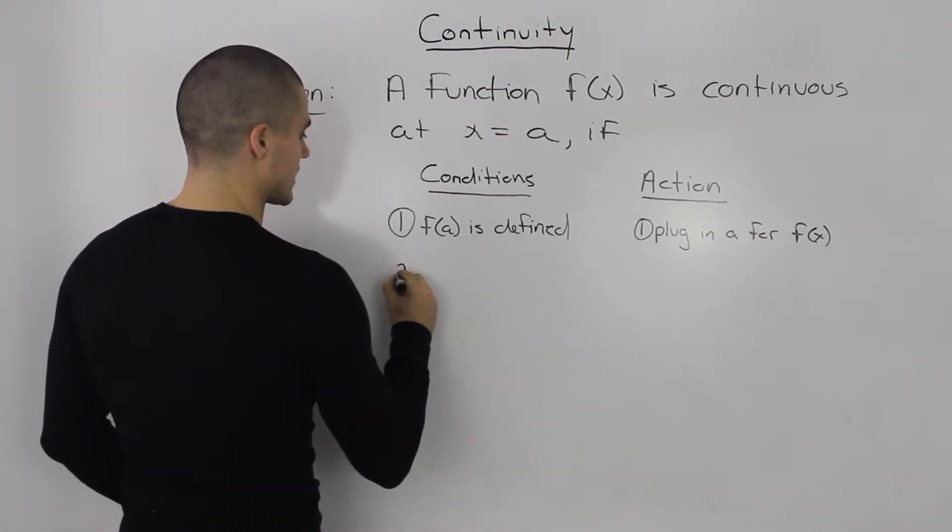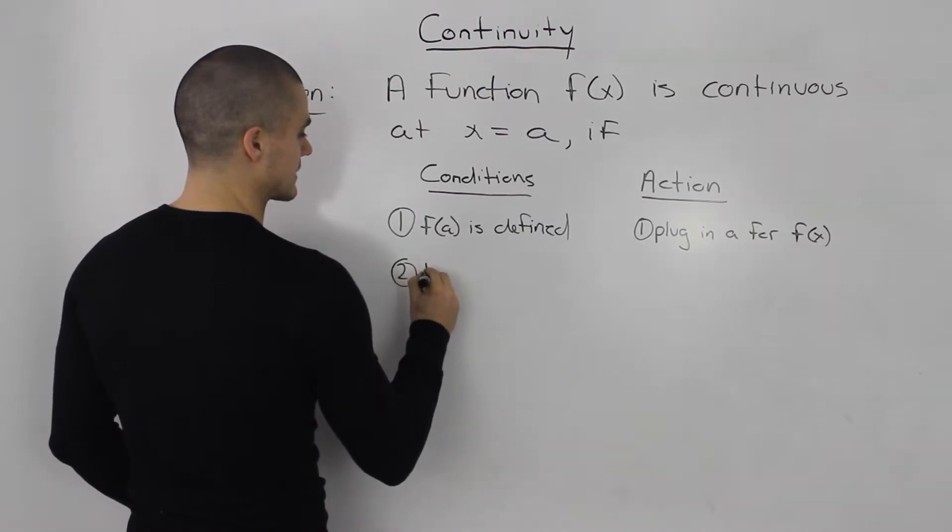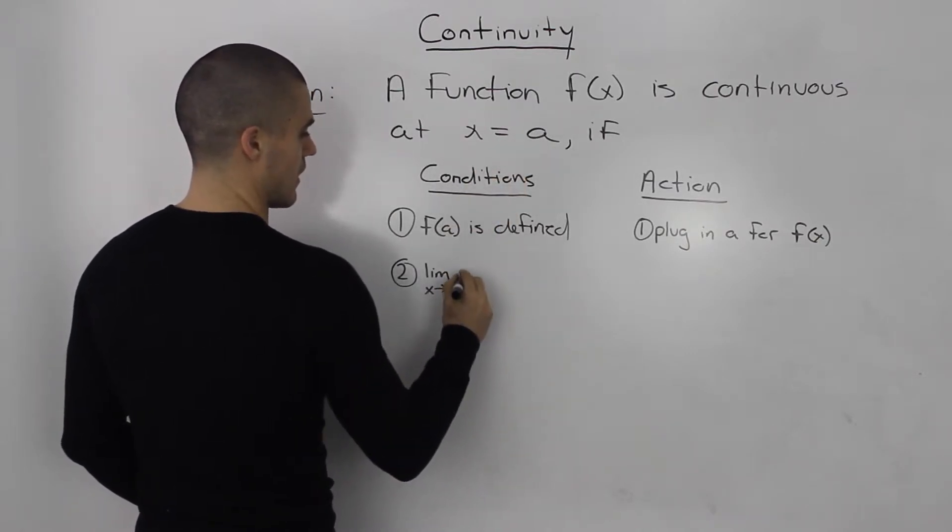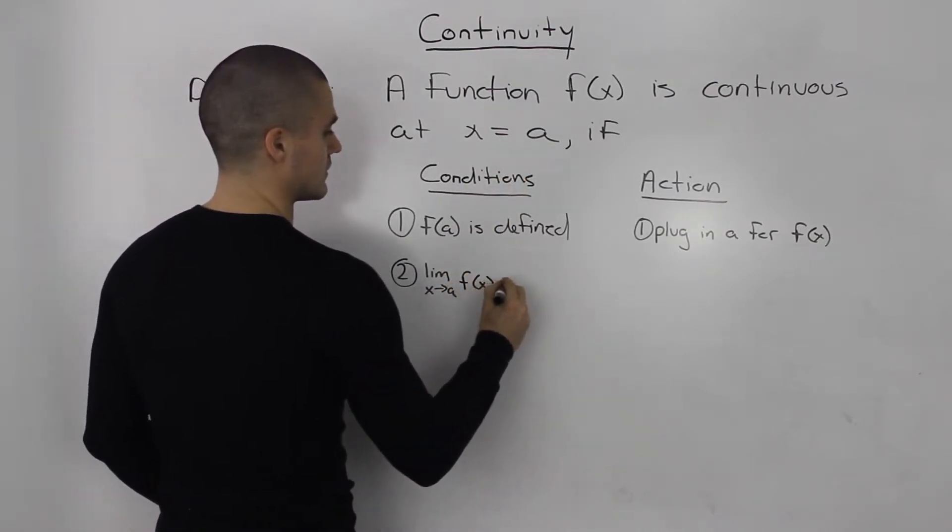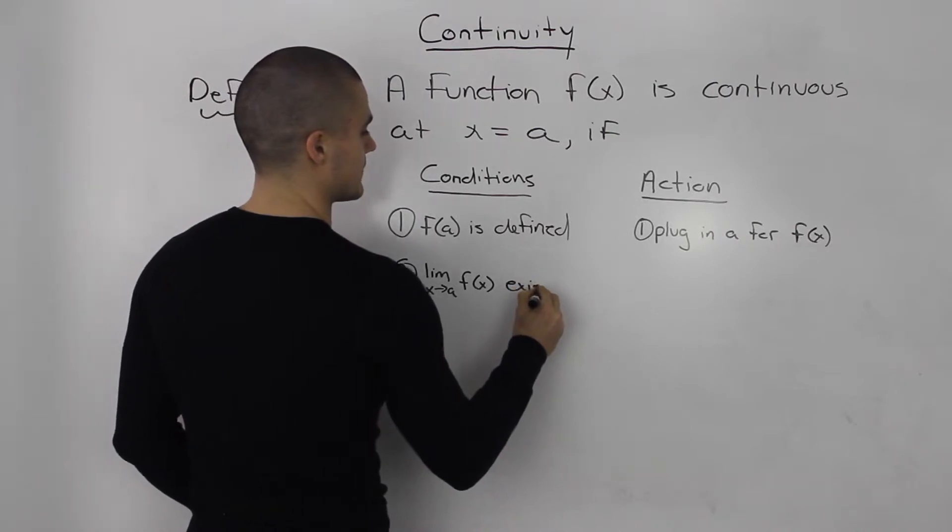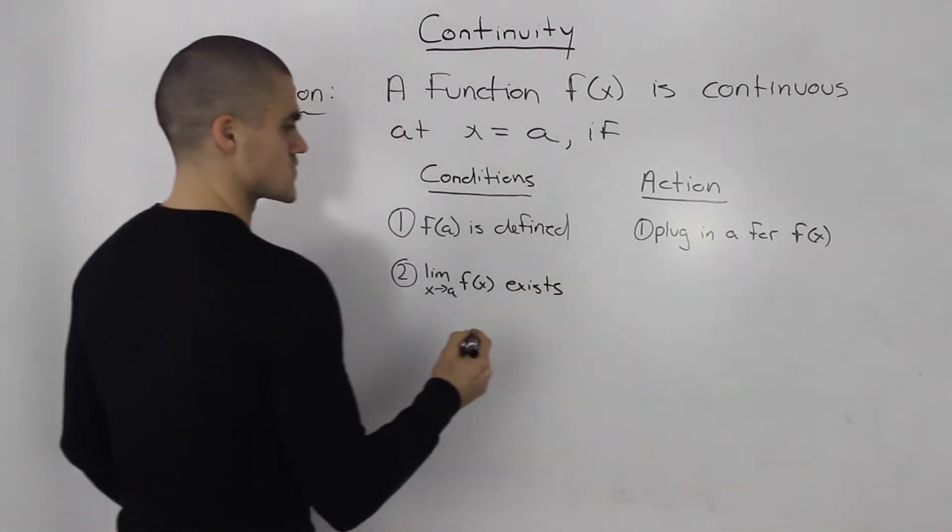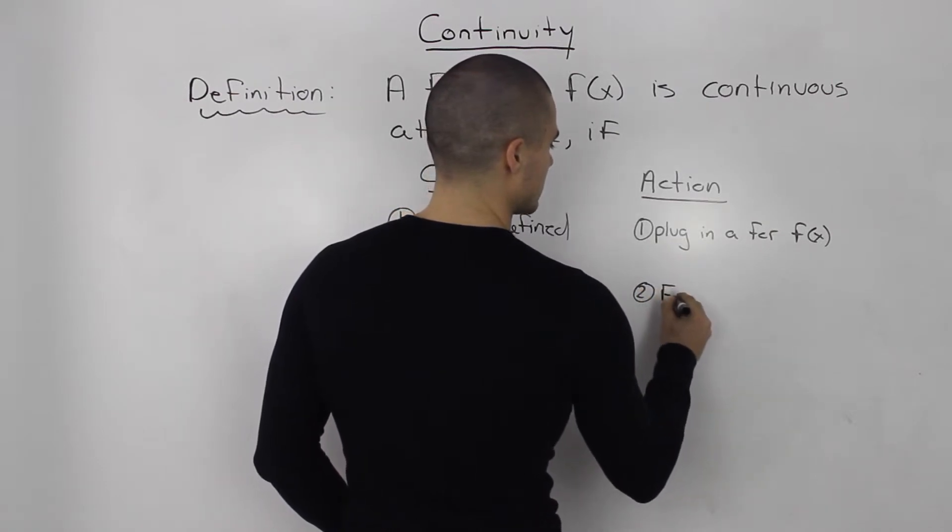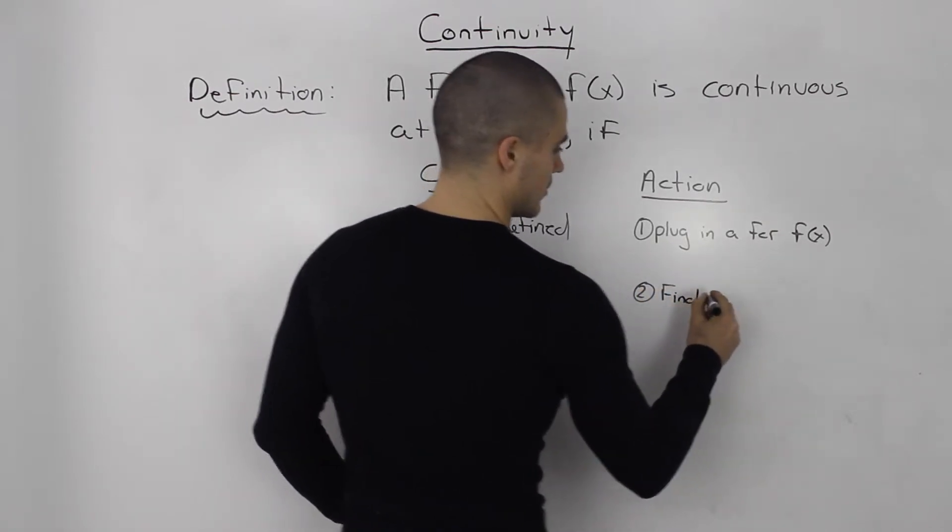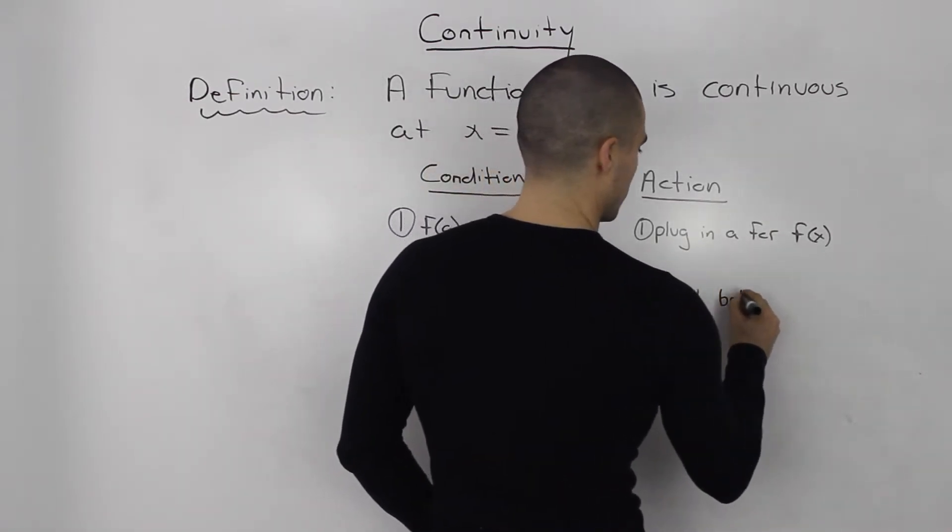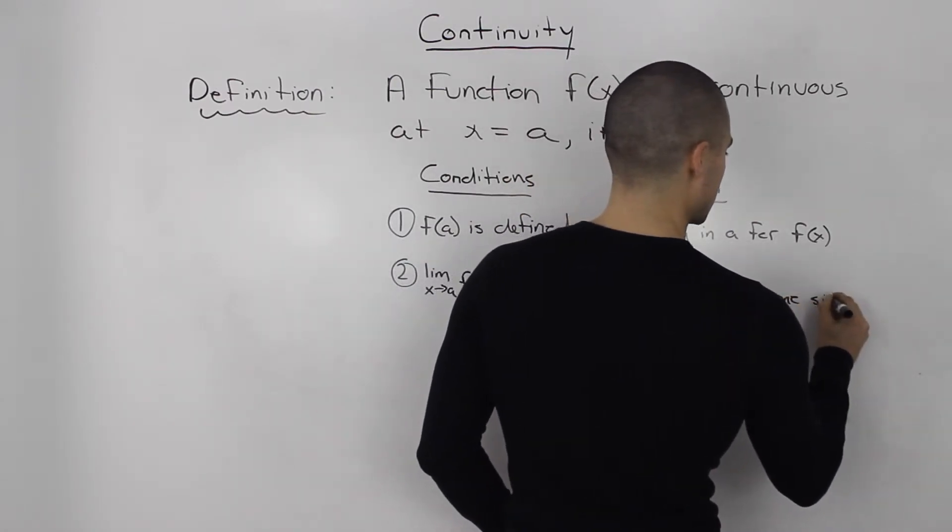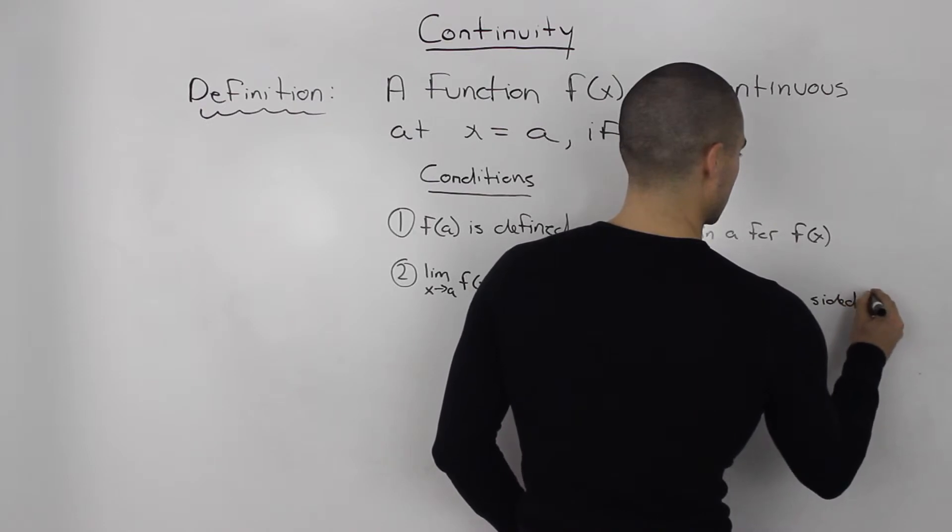When that condition passes, the second condition we have to prove is that the limit as x approaches a of the function exists. The action to take for that is to find both one-sided limits.